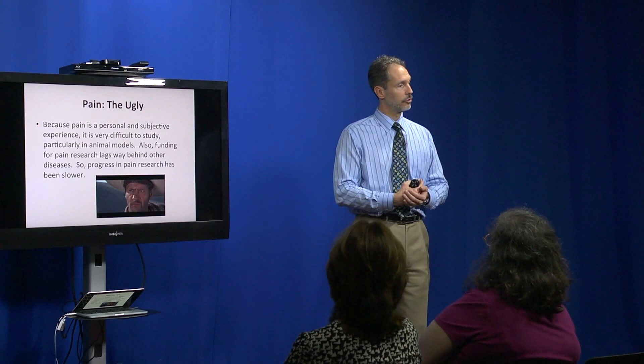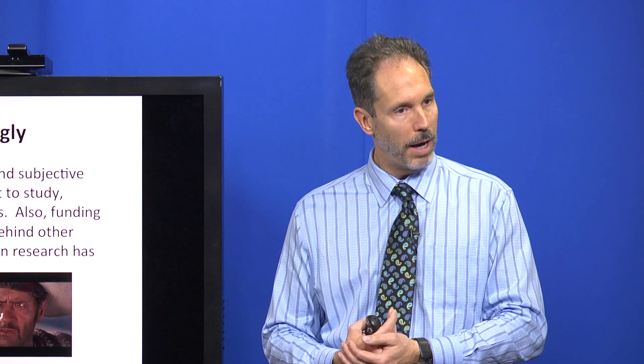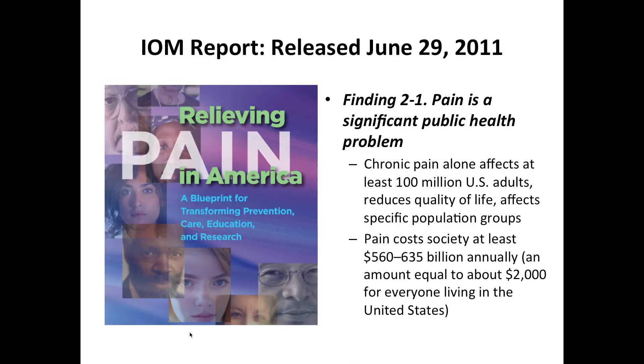The other part of the ugly is that funding for pain research lags well behind most other diseases, and our progress for pain research has been quite slow. The gold standard for treating pain has been around for thousands of years—that's from the opium poppy.